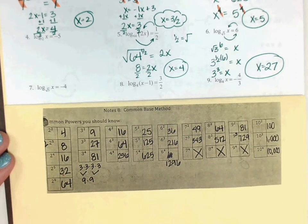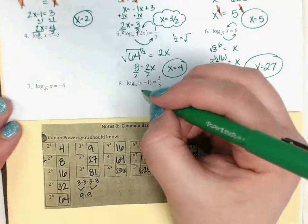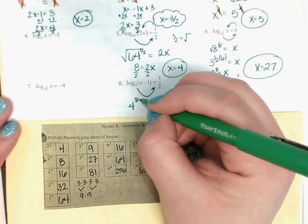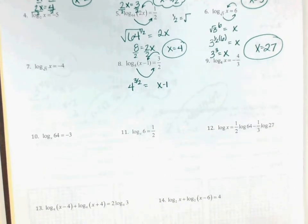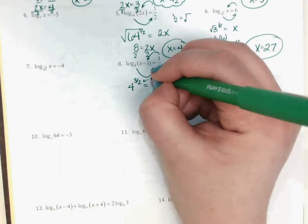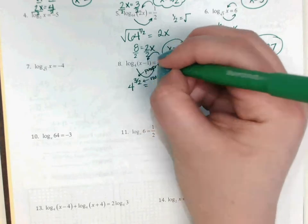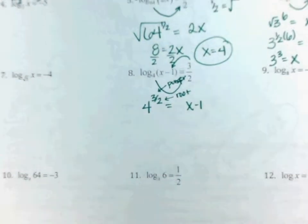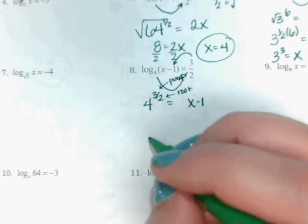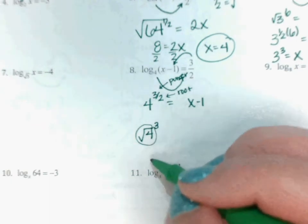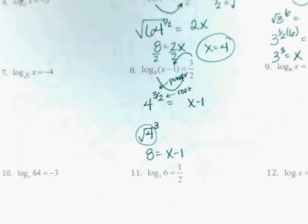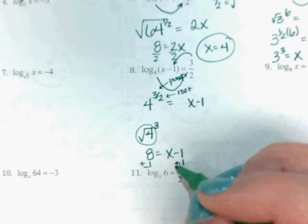Let's go down to number 8. Where am I going to start my loop? 4 to the 3 over 2, bring it back around, equals x minus 1. Remember how to break these down: the bottom number is the root, the top number is the power. So I write it as 4 to the power of 3 and then a square root. Take the square root of 4 first — that's 2. Then 2 cubed is 8. If 8 is x minus 1, then plus the 1 across — x equals 9.